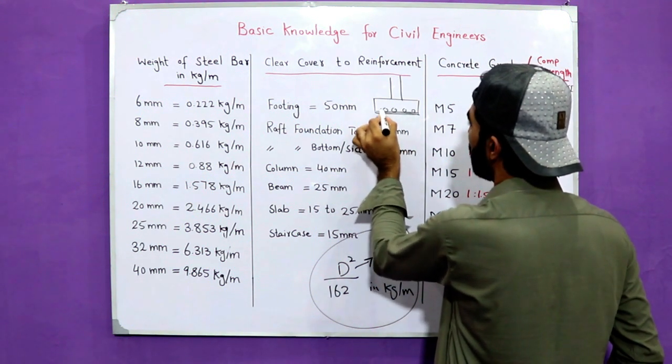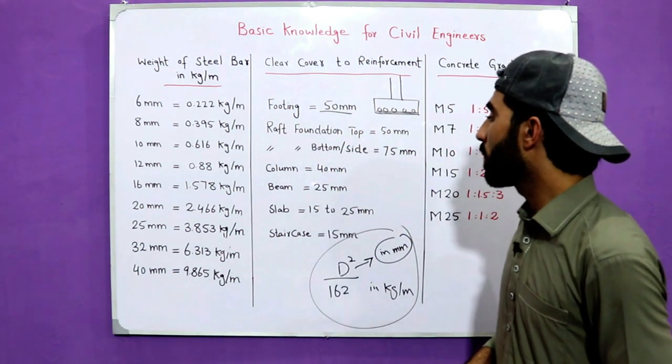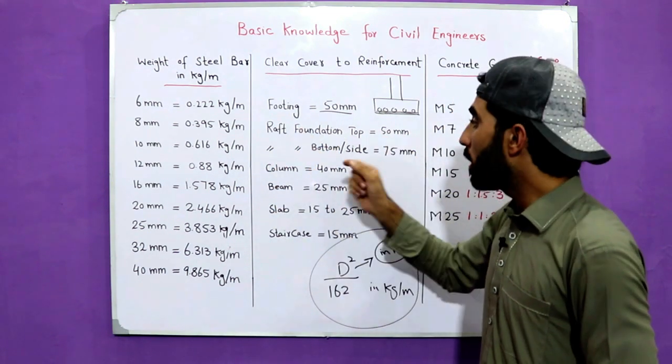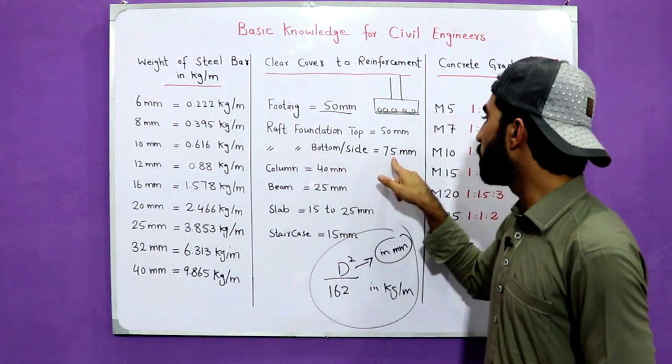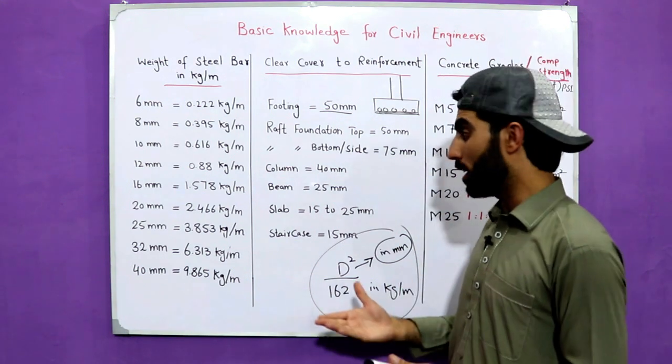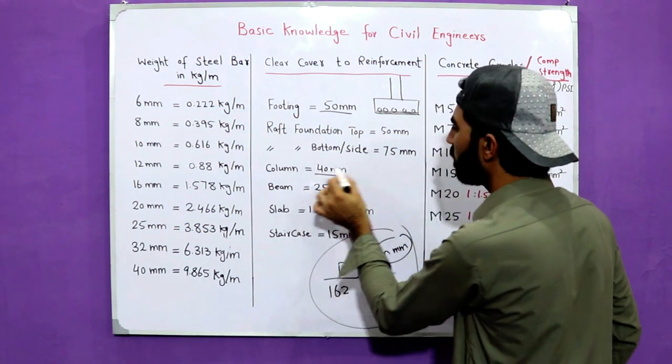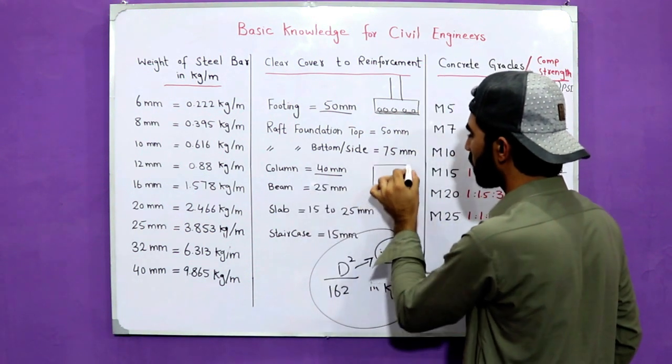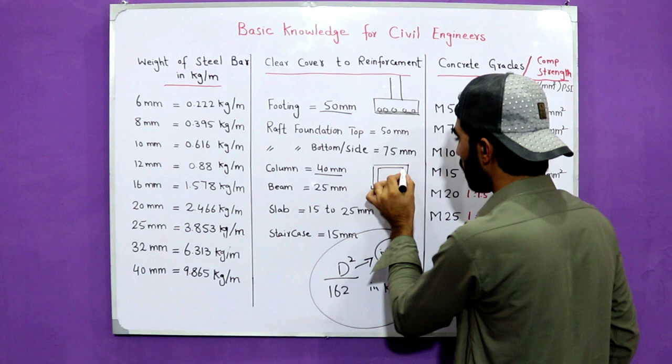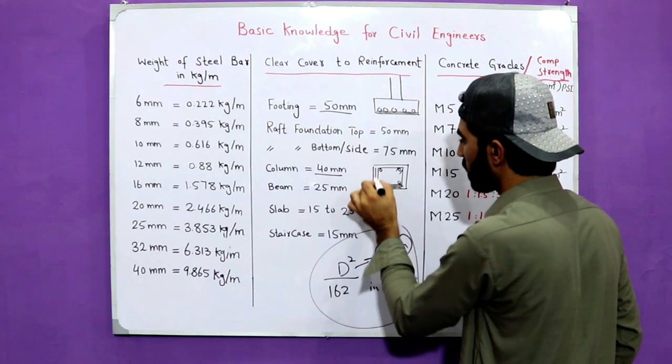For raft foundation top it should be 50mm, but for bottom and sides it's 75mm. For column we've discussed in many videos that it's 40mm. This is the top of column, these are lateral ties - this is concrete cover, it should be 40mm.